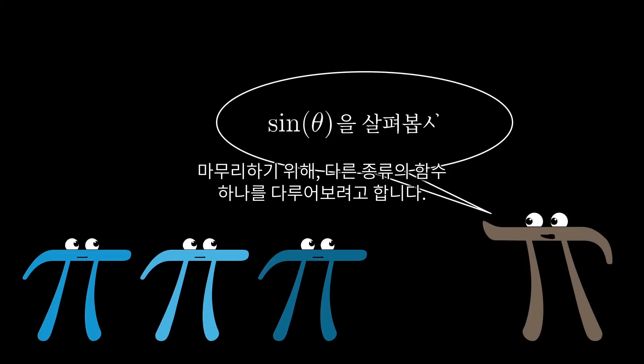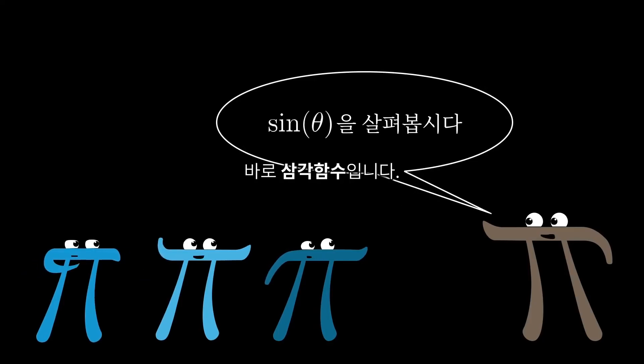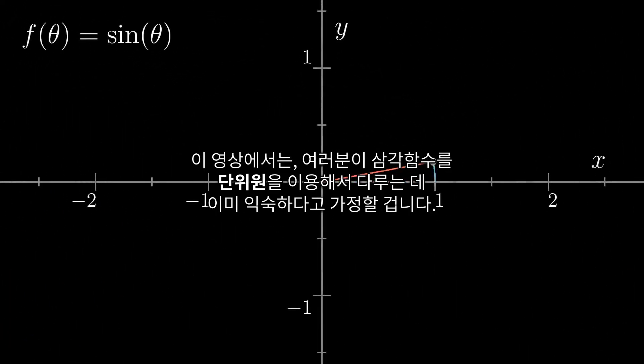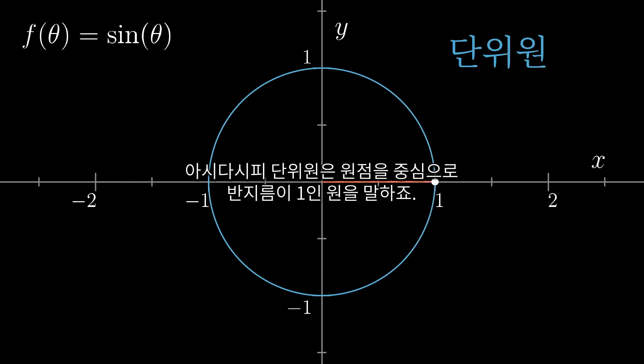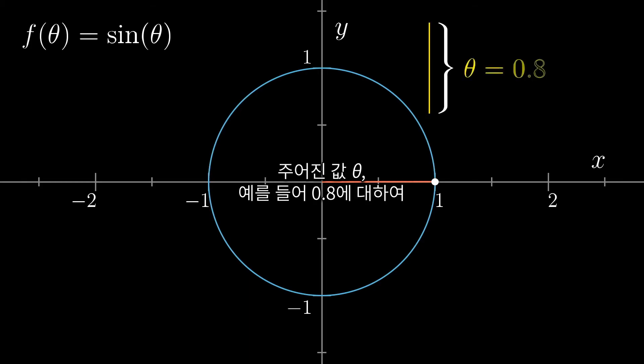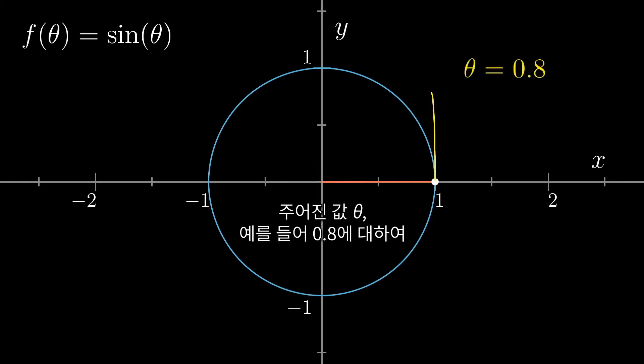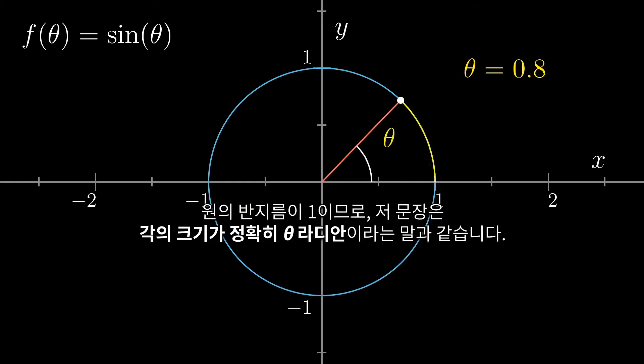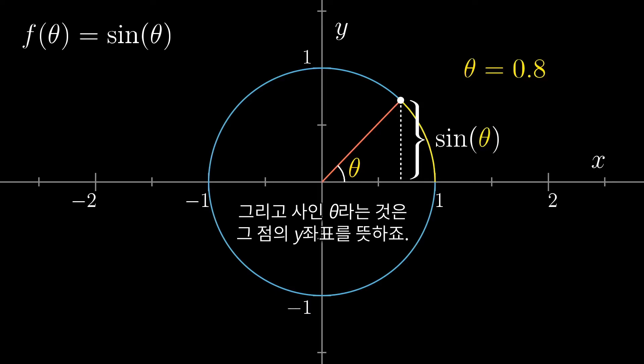To finish things off, I want to tackle one more type of function, trigonometric functions. And in particular, let's focus on the sine function. So for this section, I'm going to assume that you're already familiar with how to think about trig functions using the unit circle, the circle with a radius 1 centered at the origin. For a given value of theta, like say 0.8, you imagine yourself walking around the circle starting from the rightmost point until you've traversed that distance of 0.8 in arc length. This is the same thing as saying that the angle right here is exactly theta radians, since the circle has a radius of 1.